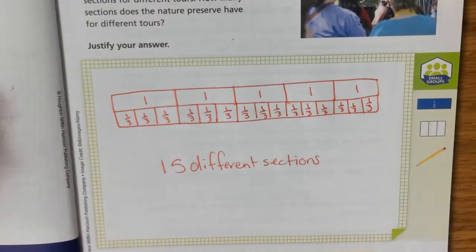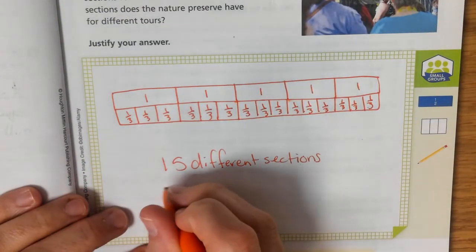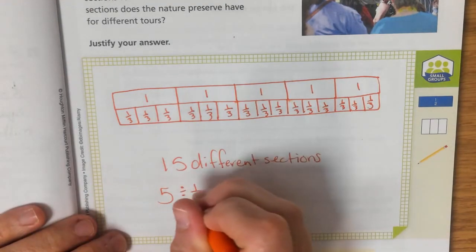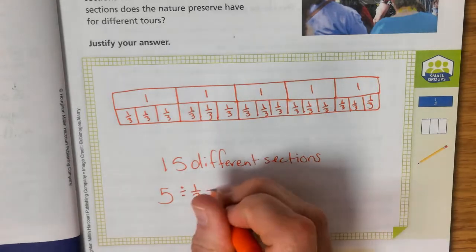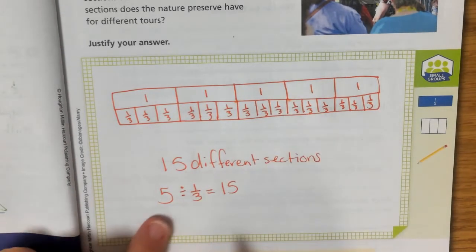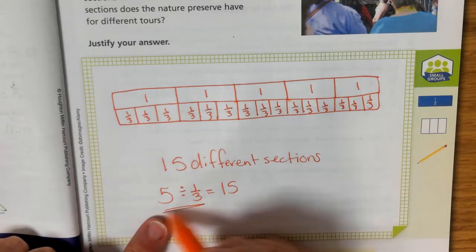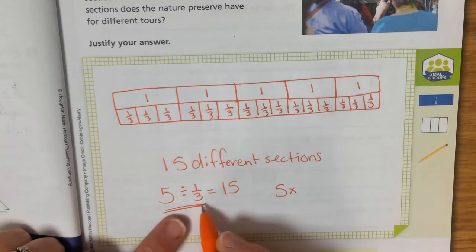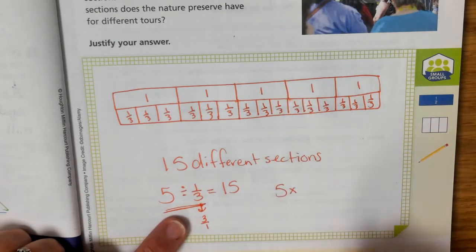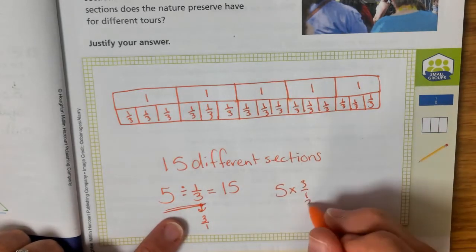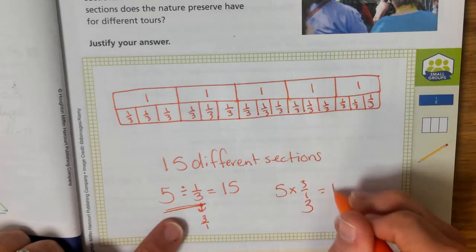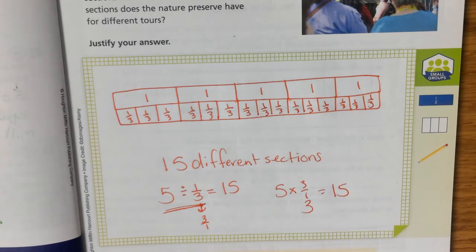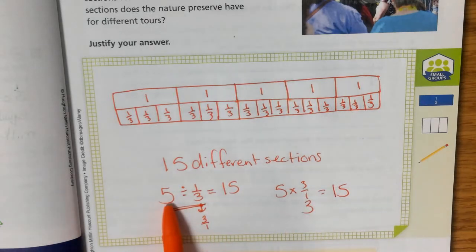And if we wanted to solve this with division, what we would say is there are 5 miles divided into 1/3 mile wide sections, and that's going to equal 15. The reason that works is because we take our dividing of a fraction and do the inverse to multiply. So I'm going to take my 5 and multiply it by the inverse of 1/3. That would be 3 over 1, which is the same thing as 3. So 5 times 3 equals 15. When you are dividing by a fraction, essentially you're multiplying by the inverse of your fraction.